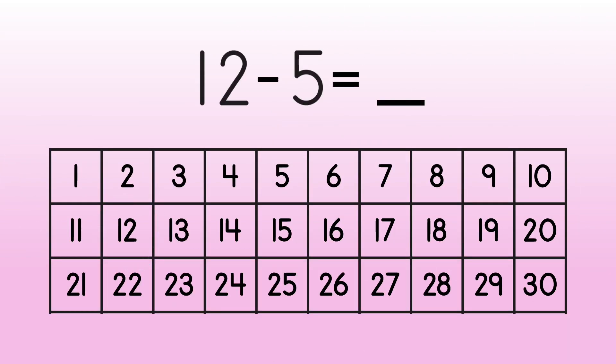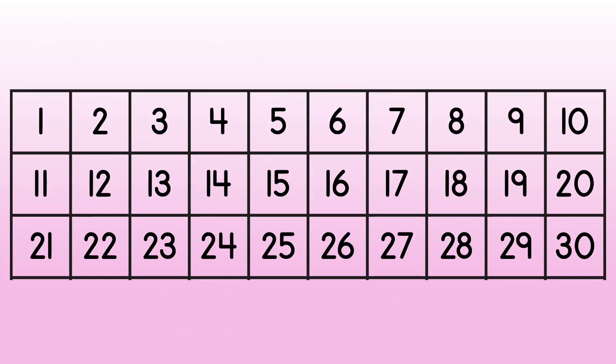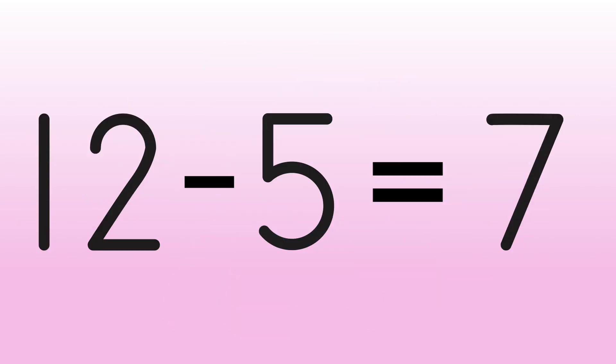Now, count back by the second number in our sentence. This is called the subtrahend. On a hundreds chart, when we subtract, we go to the left and then up. Here's 12. Now, we count back 5. 1, 2, 3, 4, 5. We land on 7. We now know that 12 minus 5 equals 7.